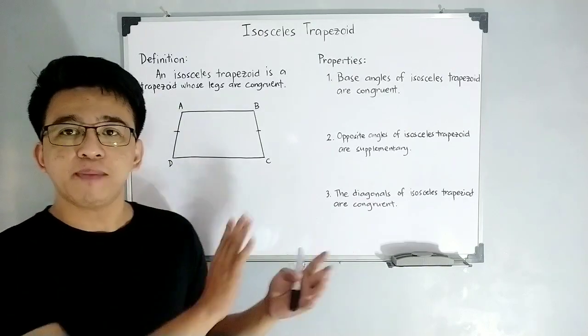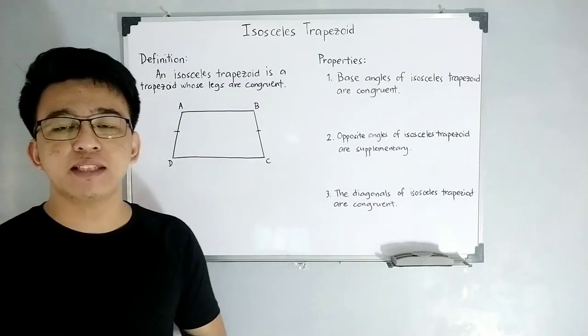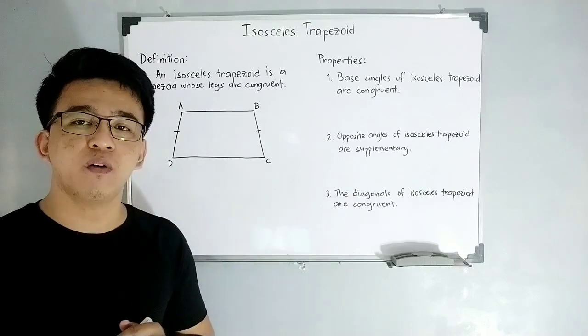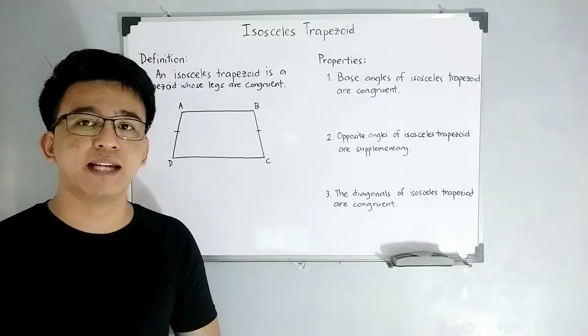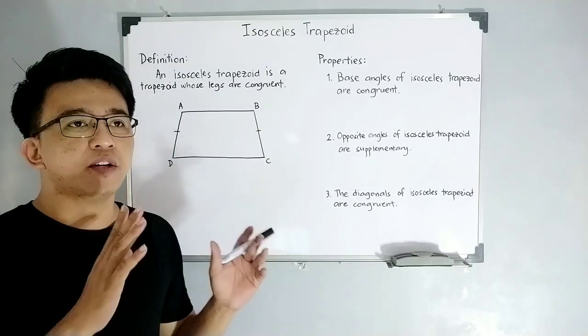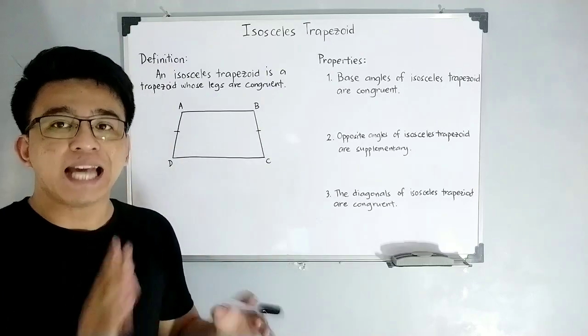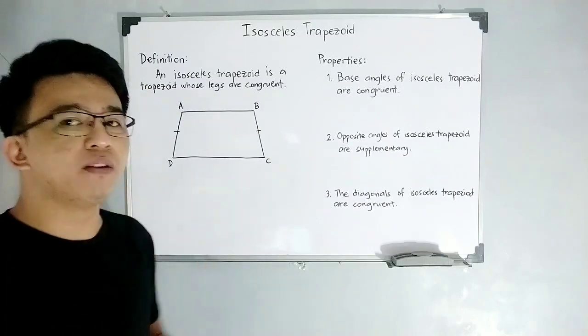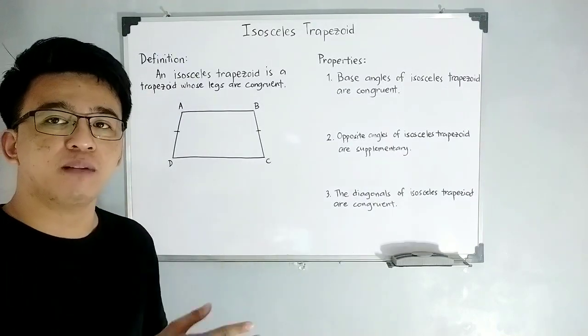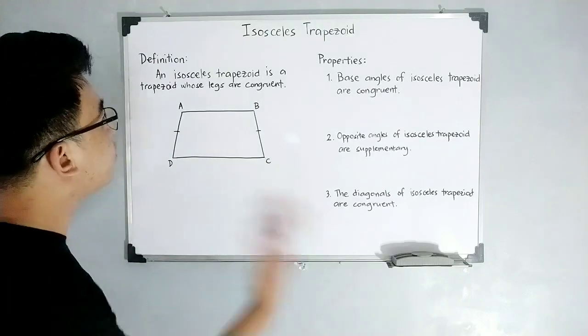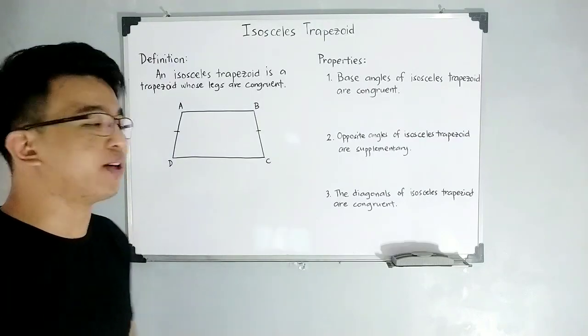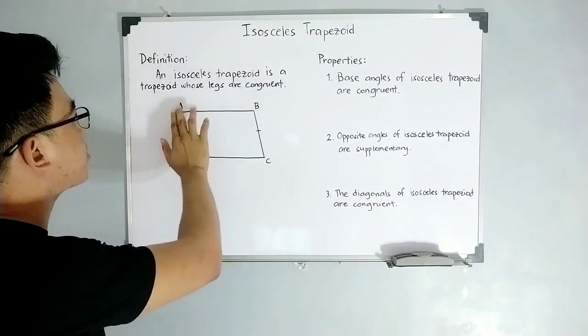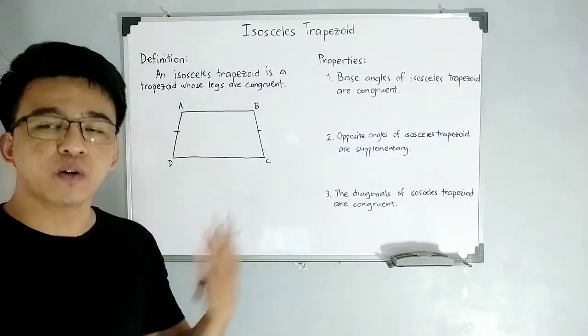So going back with our topic last time, trapezoid is considered or defined as a quadrilateral with one pair of opposite parallel sides. So that definition is also inherited or adopted by this isosceles trapezoid. It also has opposite parallel sides and later on, we'll discuss it. So how do we define isosceles trapezoid?